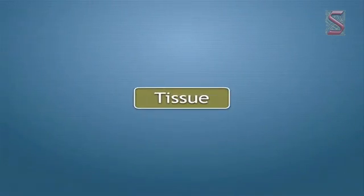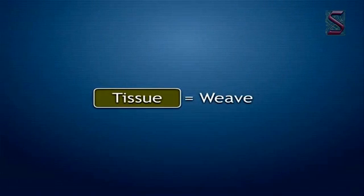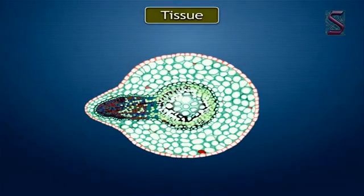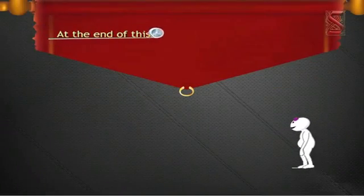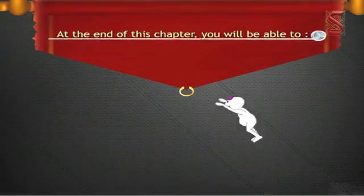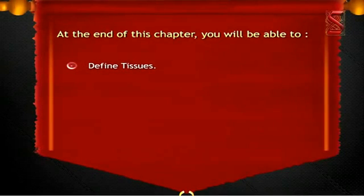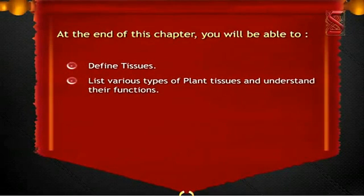The word 'tissue' is derived from a Latin word meaning 'to weave.' The cells are woven together with extracellular fibers to form the tissues. At the end of this chapter, you will be able to define tissues and list various types of plant tissues and understand their functions.